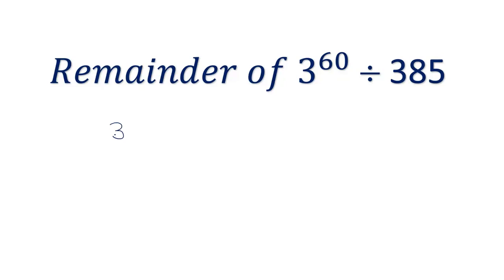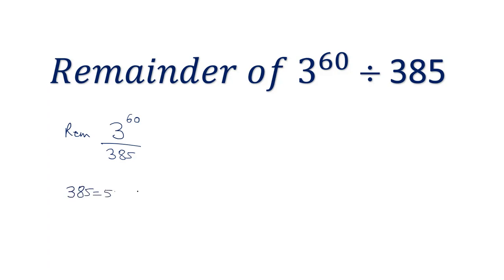The question we have is 3 power 60 divided by 385. We have to find out the remainder. The denominator is 385, which can be written as 5 into 7 into 11.